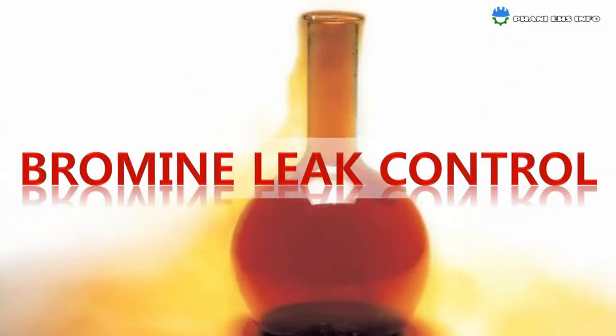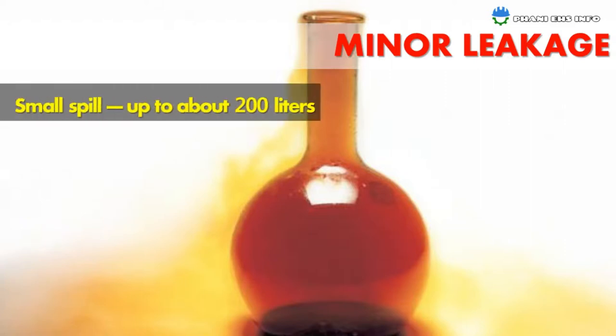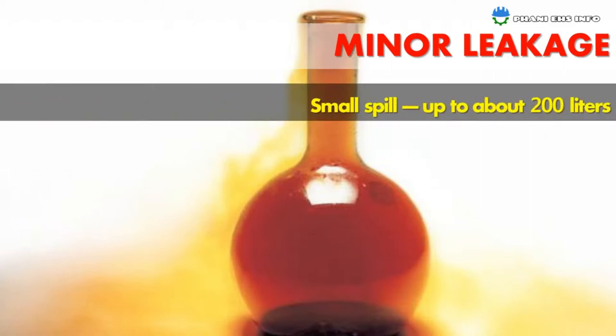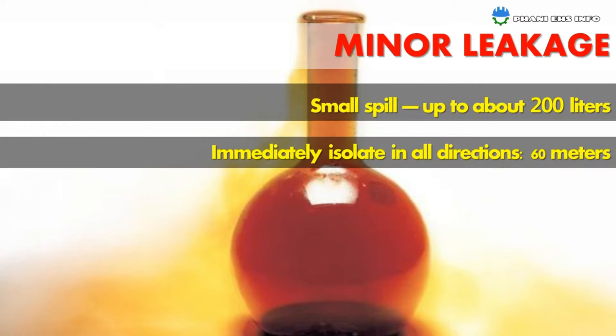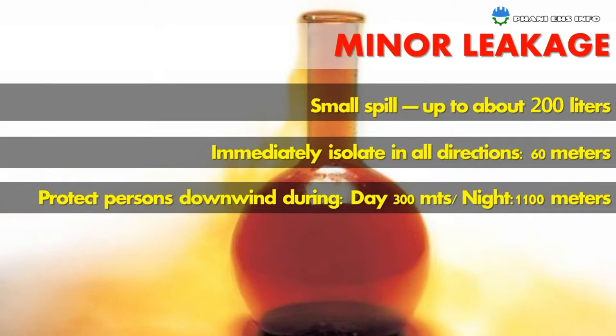Bromine leak controls: if a minor leakage of up to about 200 liters is found, immediately isolate in all directions at a distance of 60 meters. Protect persons downwind at 30 meters during daytime and 300 meters during nighttime, and 1,100 meters distance at night.